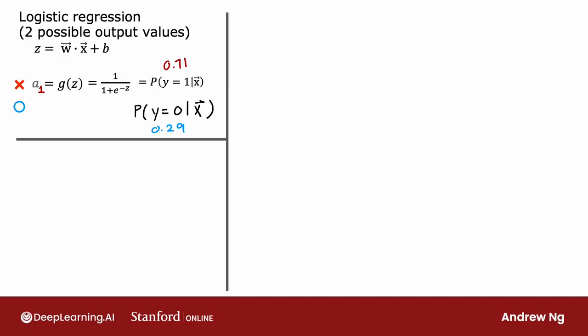To set us up for the generalization to softmax regression, I'm going to think of logistic regression as actually computing two numbers. First, a1, which is the chance of y being equal to 1 given x. And second, a2, which is 1 minus a1, which is just the chance of y being equal to 0 given the input features x. And so a1 and a2, of course, have to add up to 1.